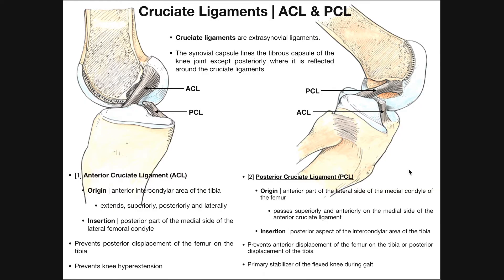Welcome back to Anatomy & Physiology on Catalyst University. My name is Kevin Tokoff. Please make sure to like this video and subscribe to my channel for future videos and notifications. In this video, we're going to be discussing the two cruciate ligaments of the knee — the ACL, which is the anterior cruciate ligament, and the PCL, which is the posterior cruciate ligament.